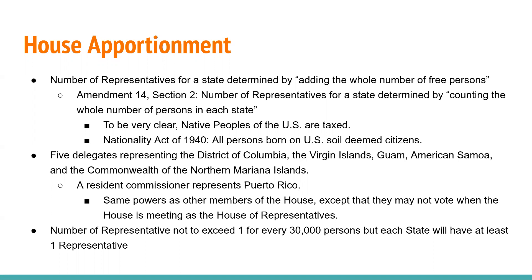The number of representatives shall not exceed one for every 30,000 persons, but each state shall have at least one representative. This is why the census is so important — the census count dictates how the number changes according to each state's population. Article 1, Section 2 provides for both the minimum and maximum size of the House. Currently, there are five delegates representing the District of Columbia, the Virgin Islands, Guam, American Samoa, and the Commonwealth of the Northern Mariana Islands, plus a resident commissioner for Puerto Rico.